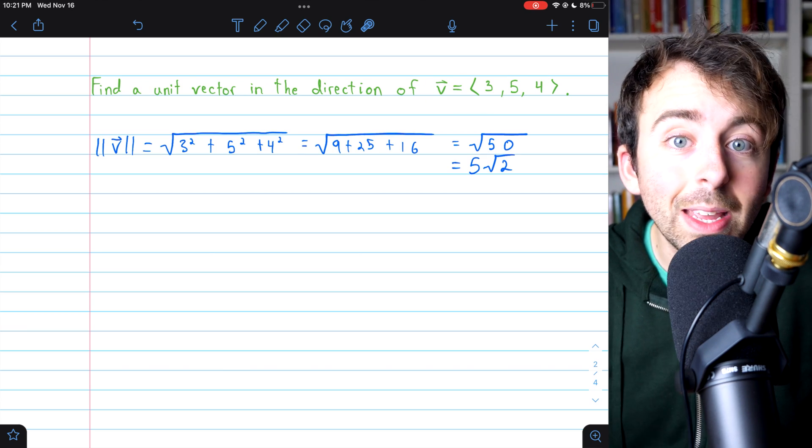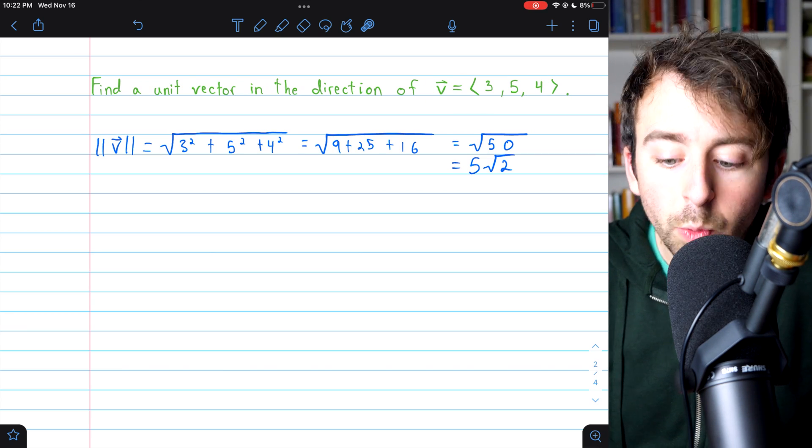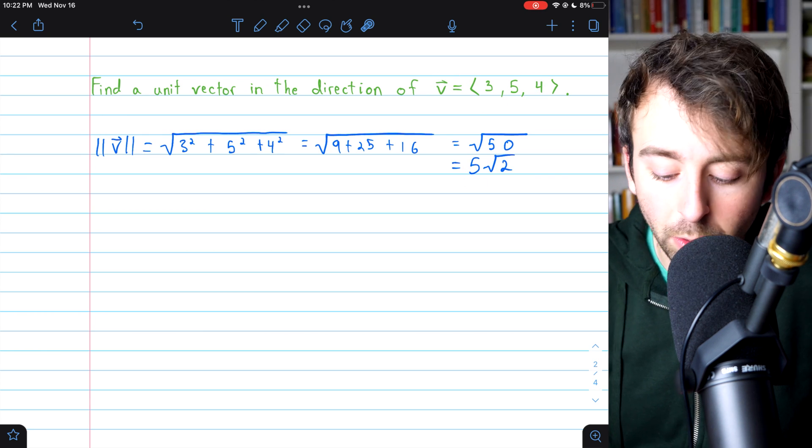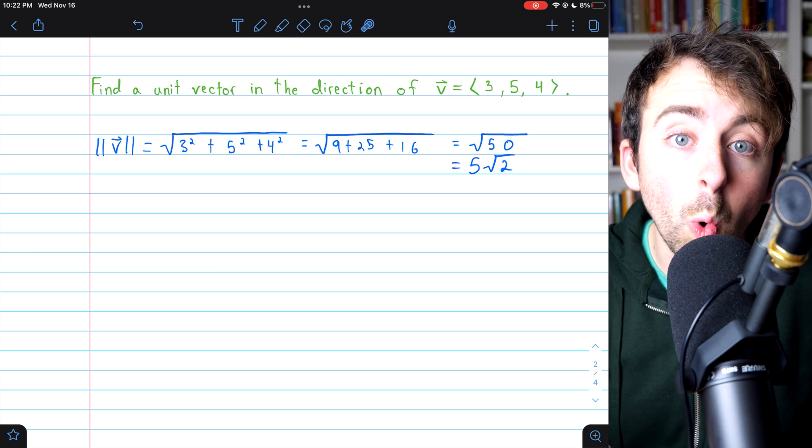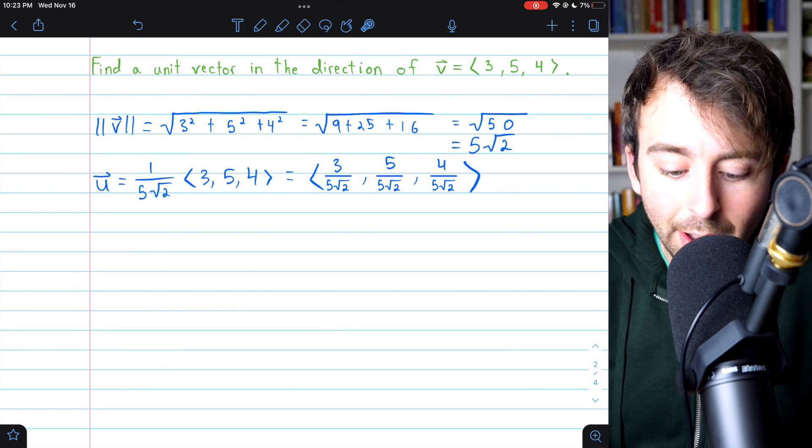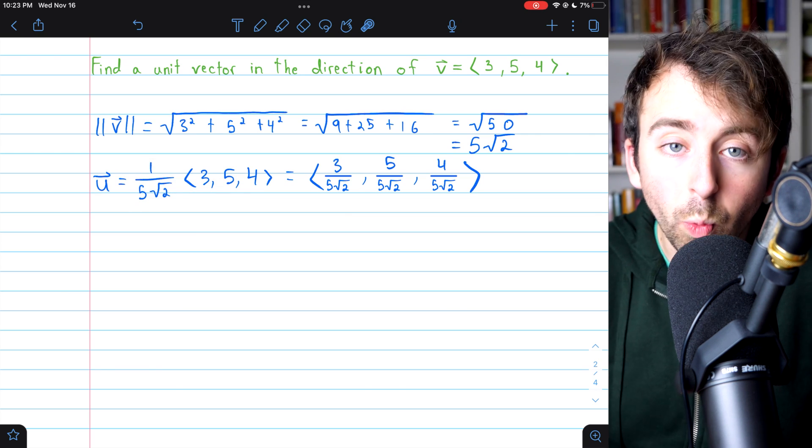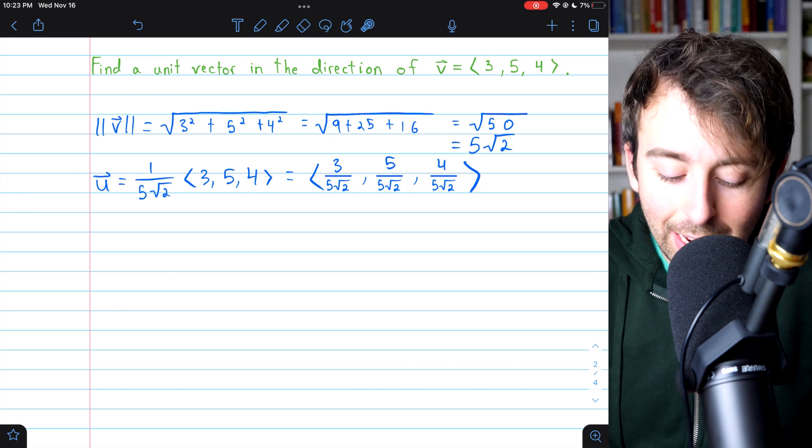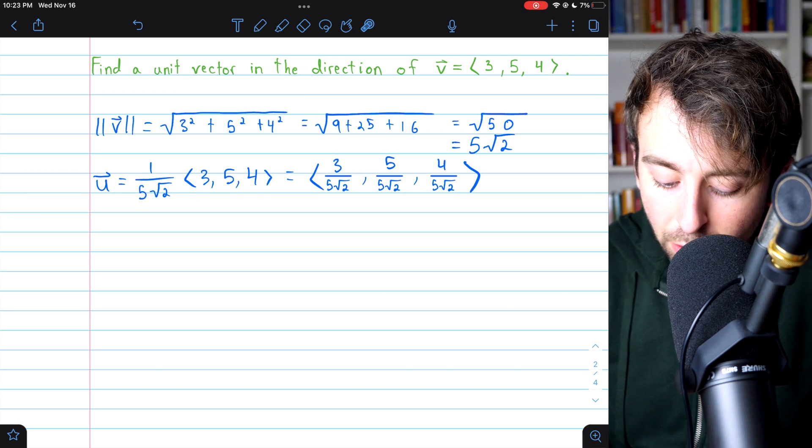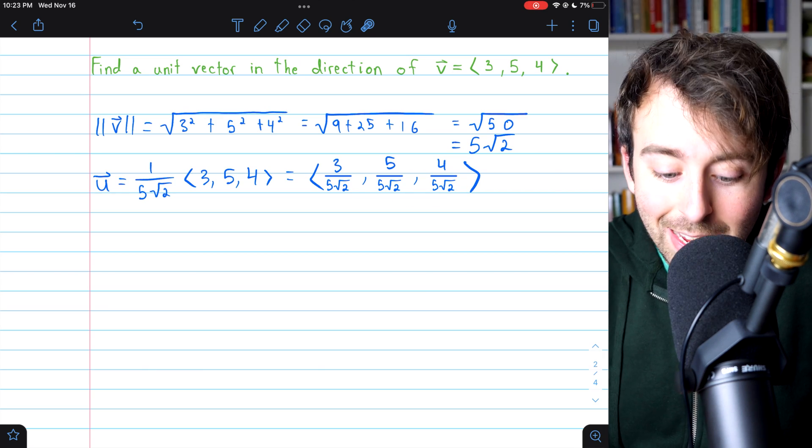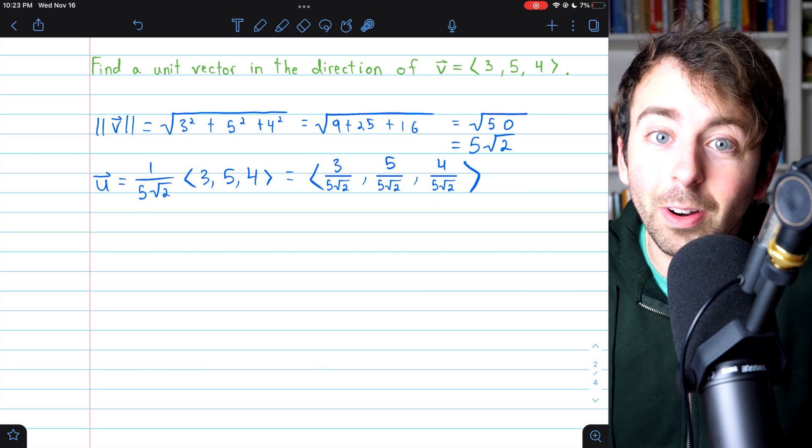So, to find the unit vector in the direction of v, we simply need to divide v by 5 root 2 or multiply v by 1 over 5 root 2. And then, here is the unit vector. We take the vector v and multiply by 1 over v's magnitude, 1 over 5 root 2. And again, you could distribute this through the vector brackets if you want, but in a lot of contexts, it will be easier to just leave this scalar out front.